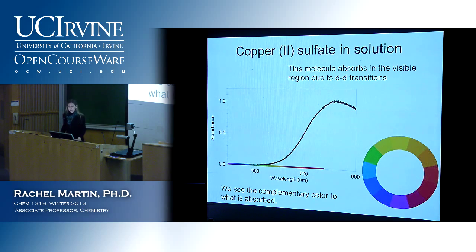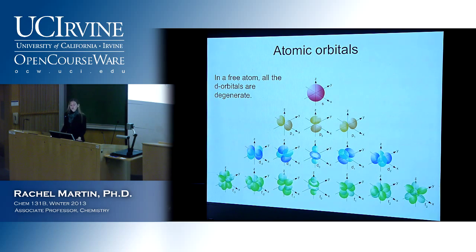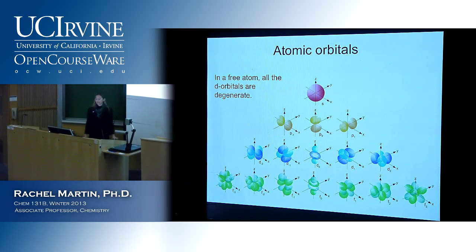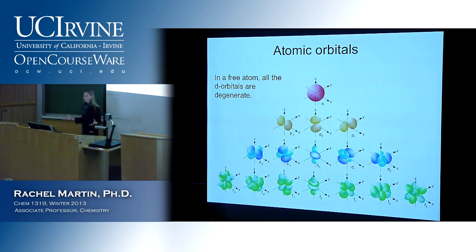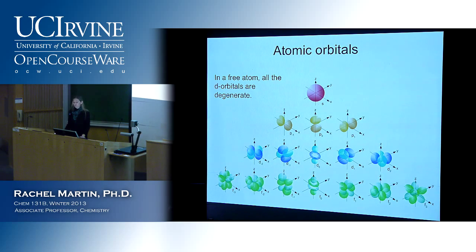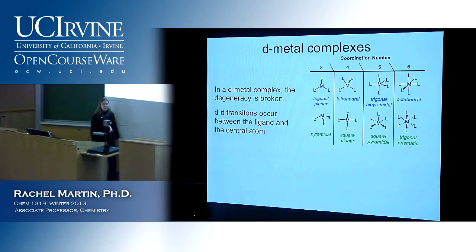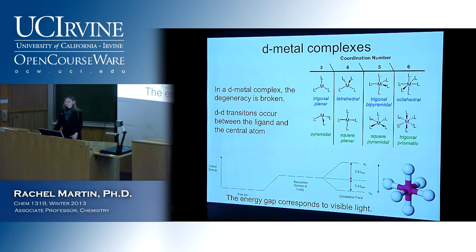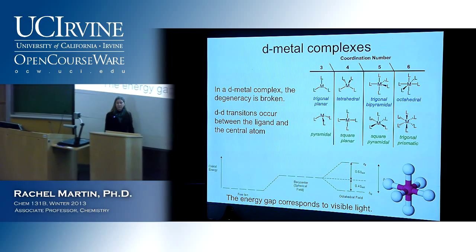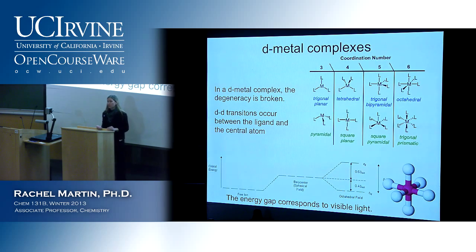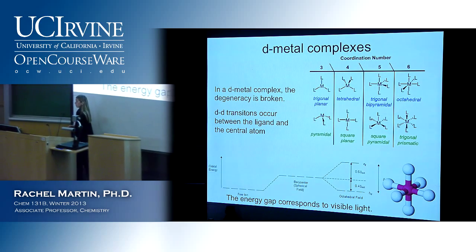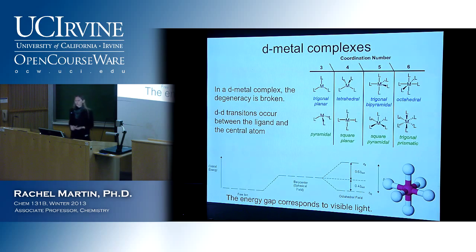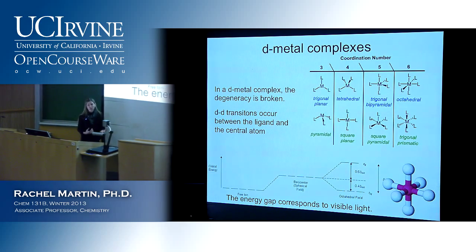What do we mean by D-to-D transitions? In a free atom, all the D orbitals have the same energy — these are the blue ones in the third row — so transitions between them wouldn't really be relevant. But in a D-metal complex where D orbitals are involved in bonding, the degeneracy is broken. You can see this from the character table: in the octahedral point group, not all D orbitals belong to the same symmetry species. That means we can get transitions between them. In an octahedral molecule, that transition energy happens to fall in the visible range, causing the compound to absorb and giving us an observable color.